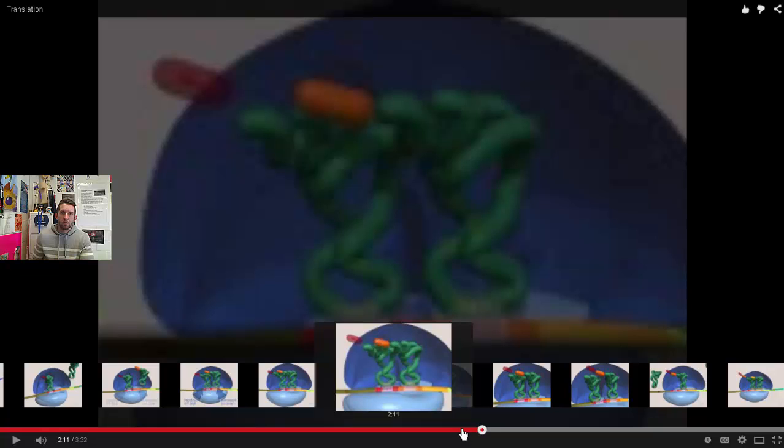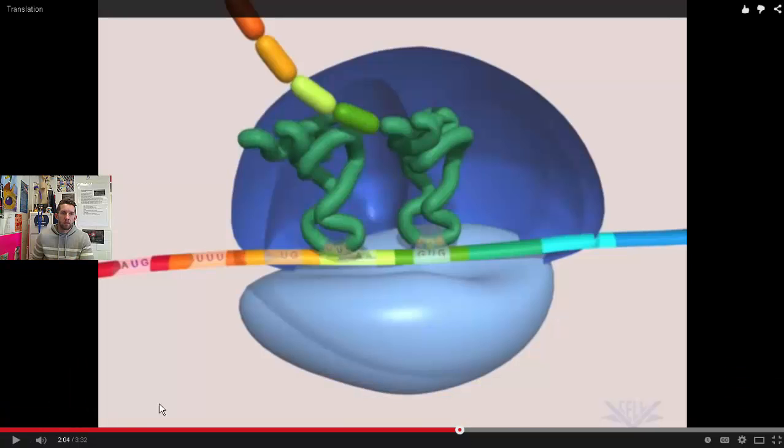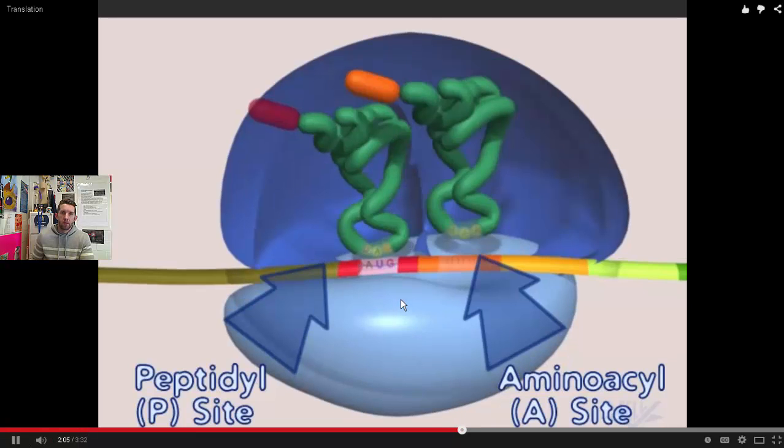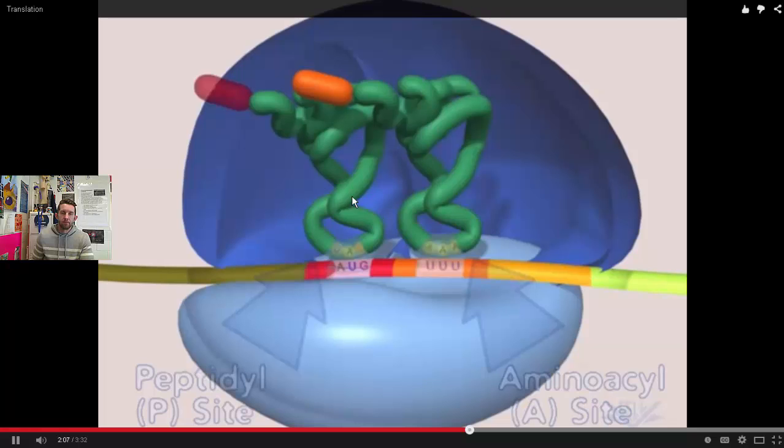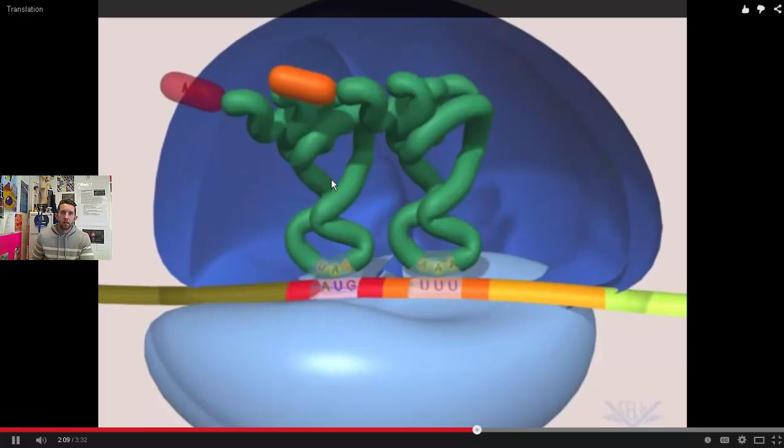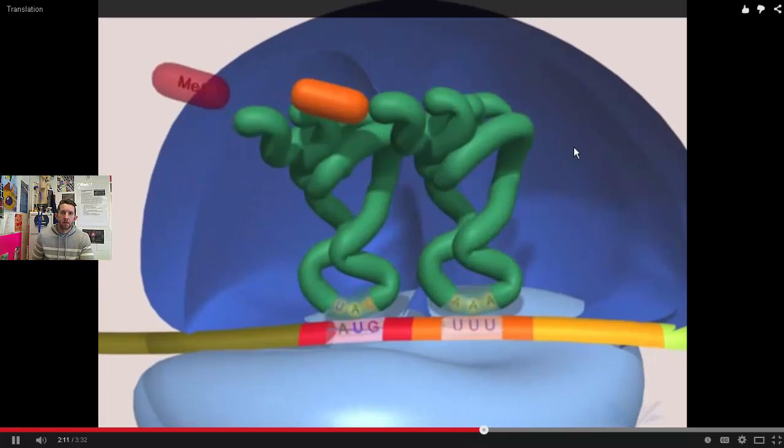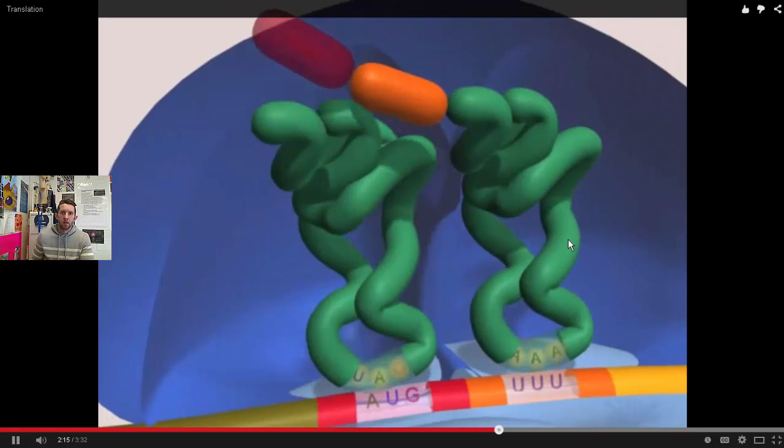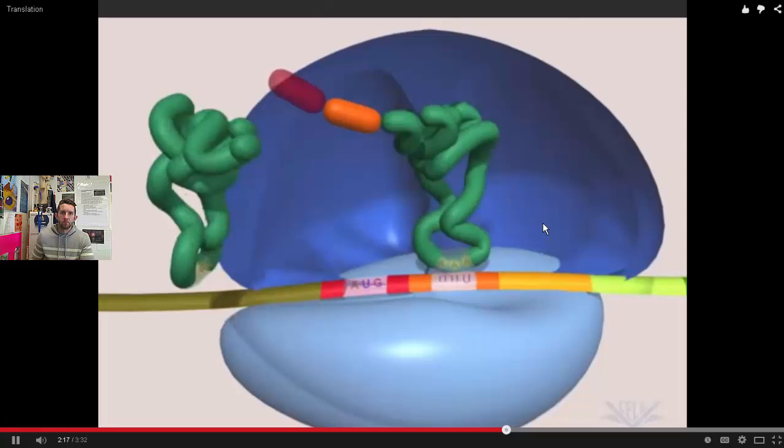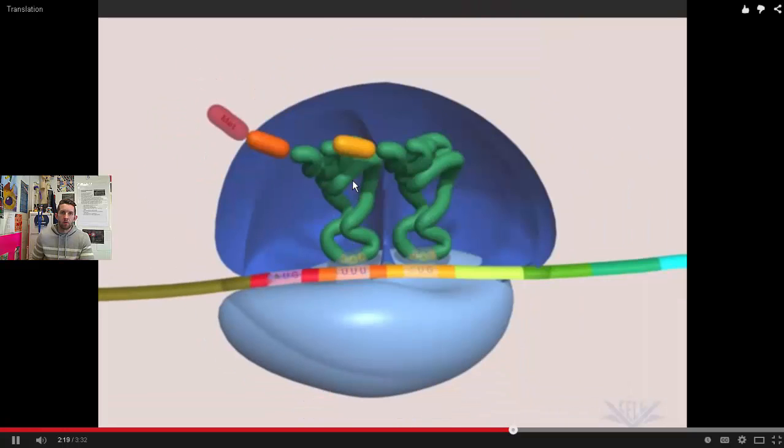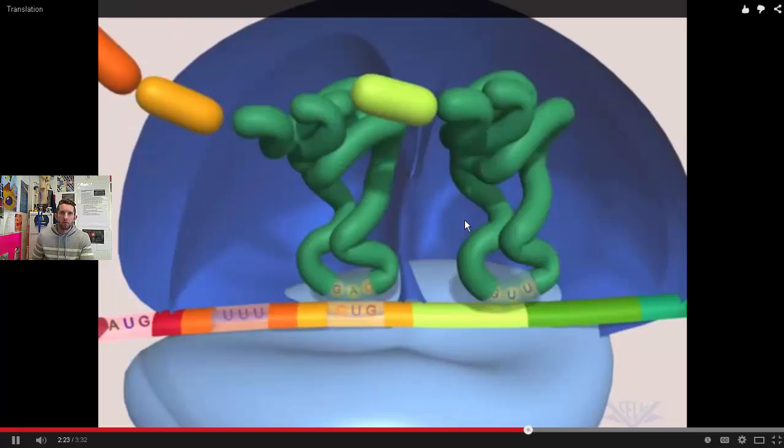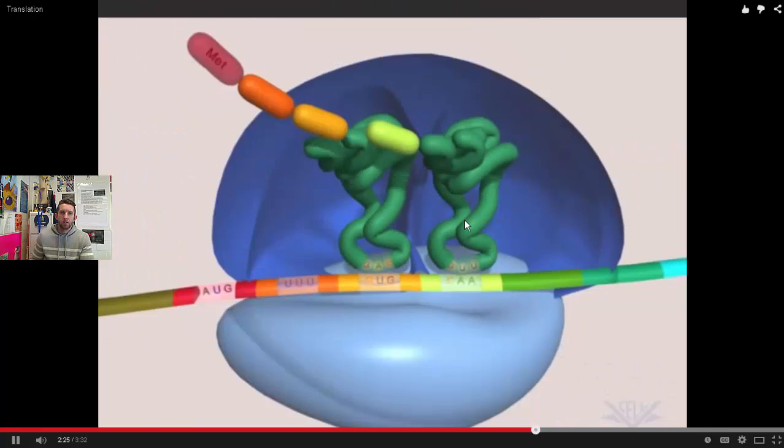So if you recall again, P site, A site. As the ribosome shifts down, the tRNA leaves the P site. The one in the A site shifts to the P. The A site opens up. The one in the P leaves. The A site opens up. There we go. Elongation. This will happen.